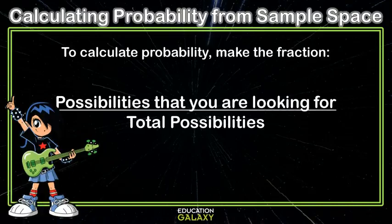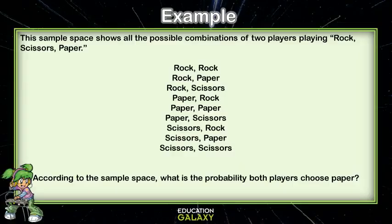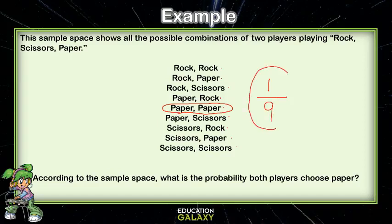Now let's look at calculating probability from a sample space. To calculate probability, you make a fraction — possibilities that you were looking for on top in the numerator, and total possibilities at the bottom in the denominator. This sample space shows all the possible combinations of two players playing rock, scissors, paper. According to the sample space, what is the probability both players choose paper? They both choose paper right here, and that's 1 out of 9 possibilities. So that probability is one ninth.